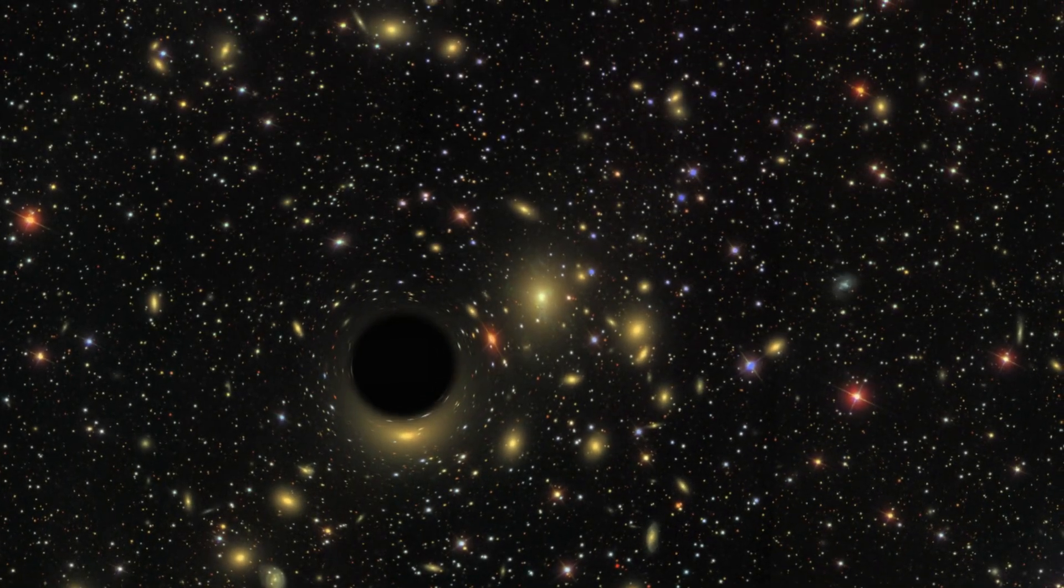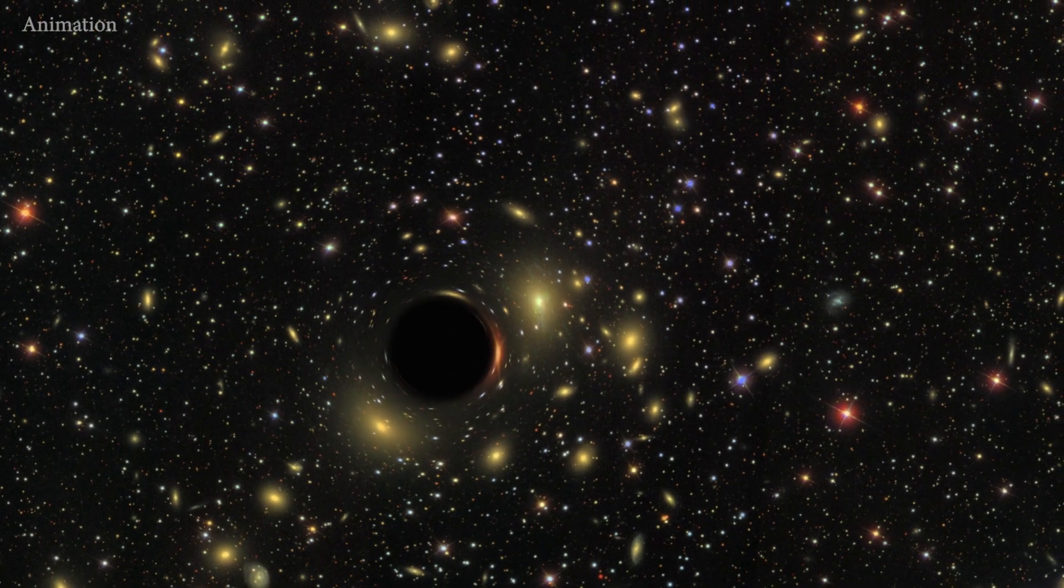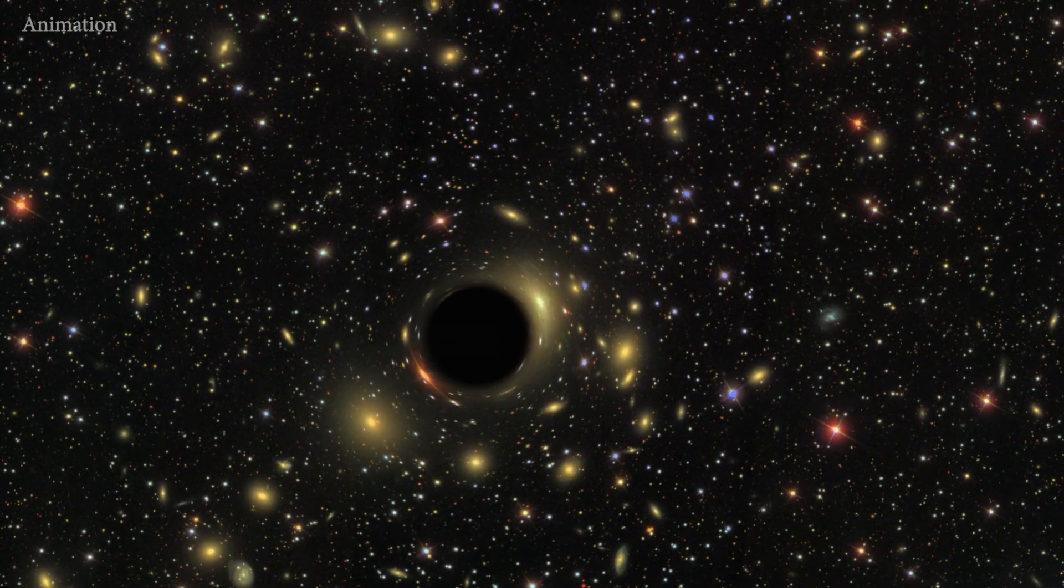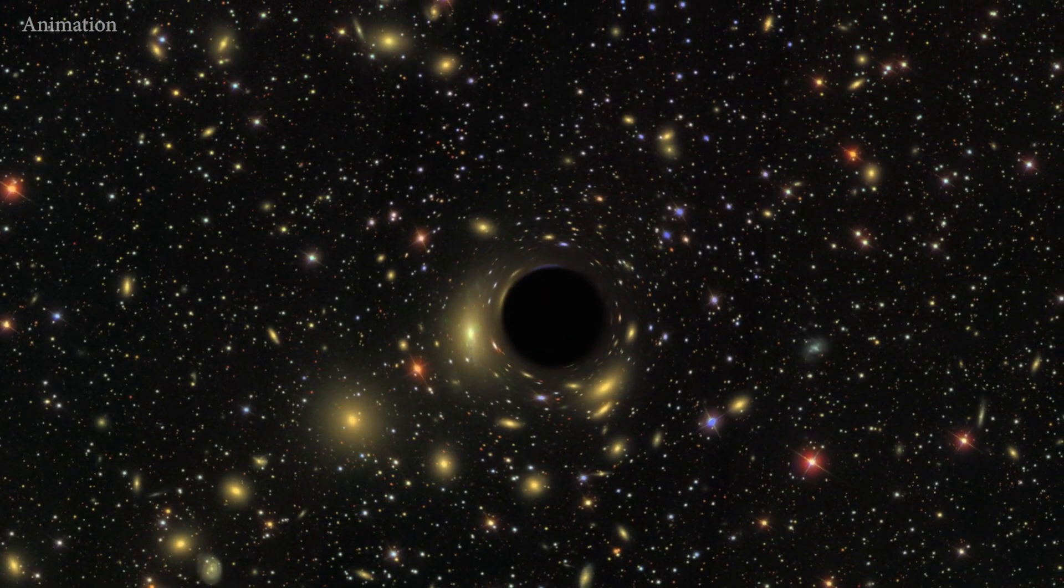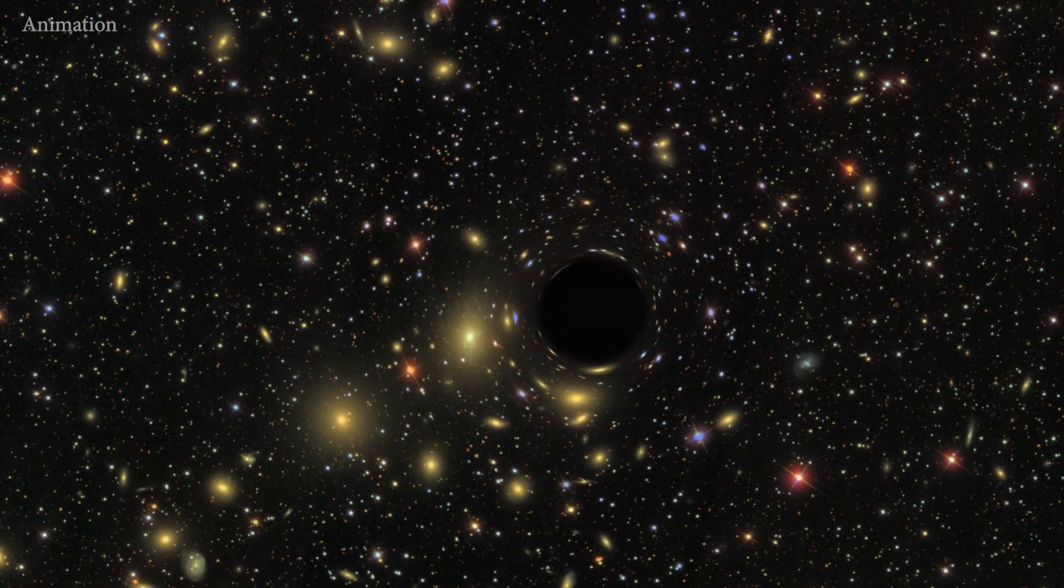But in between these extremes is something much harder to find: intermediate mass black holes. They range from a few hundred to a few hundred thousand times the mass of our Sun.